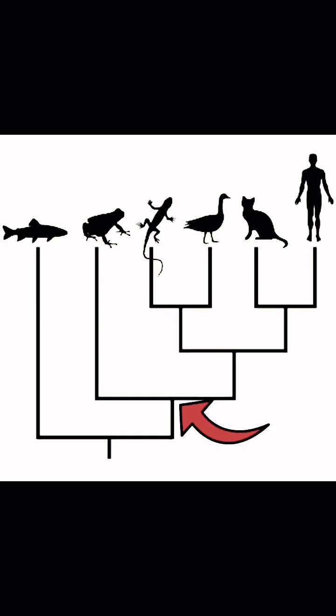Going back further on the tree, we find another creature that isn't a frog, and isn't a lizard, and isn't a bird, and isn't a cat, and isn't a human, and didn't look anything like any of us, but is all of our common ancestor, and its descendants eventually evolved into everybody here represented on this graph.